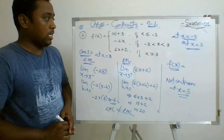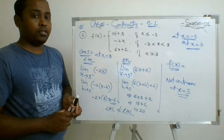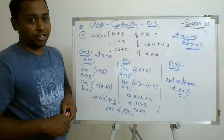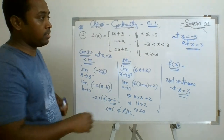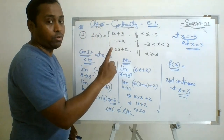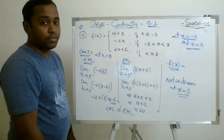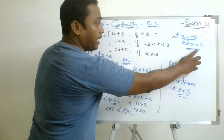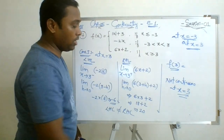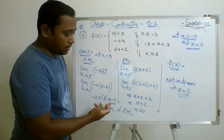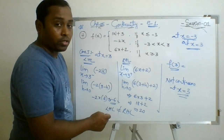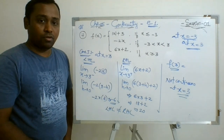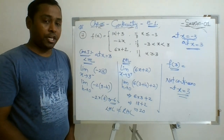So what we understood: the same function may be continuous at one point and not continuous at another point, depending on where we are discussing continuity. At x equal to minus 3 we found all three parts — left hand limit, right hand limit, value of function — were equal to 6, so continuous. At x equal to 3 we found left hand limit is minus 6 and right hand limit is 20, which are not equal. Limit does not exist, so graph is not continuous at x equal to 3. This is how we check continuity.